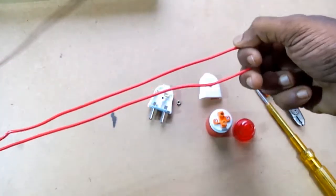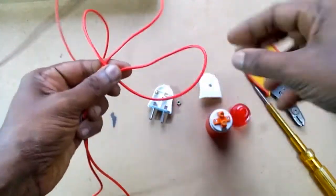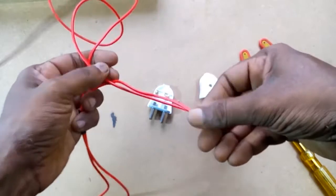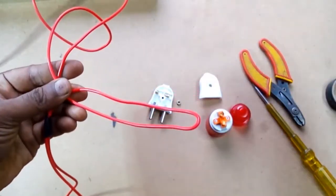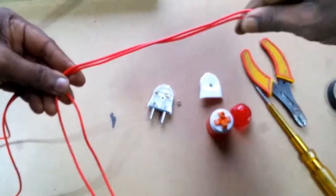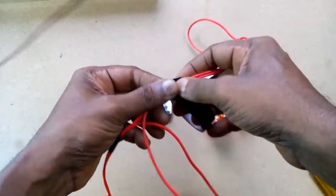Take the same color wire and remove the insulation. Take the color and remove the color.